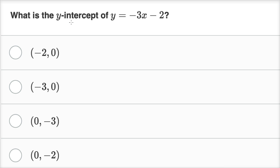So we're asked, what is the y-intercept of y equals negative three x minus two? So once again, we already have it in slope-intercept form. It's already been solved for y. It's of the form y equals mx plus b.